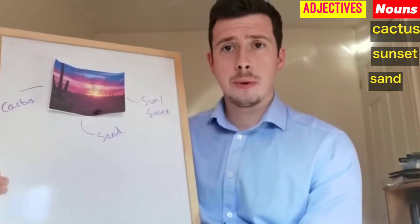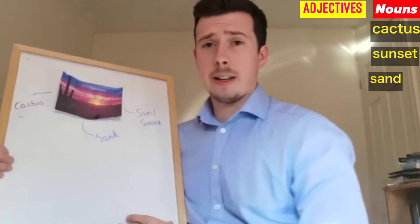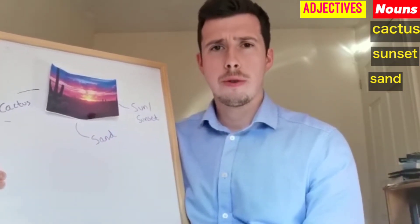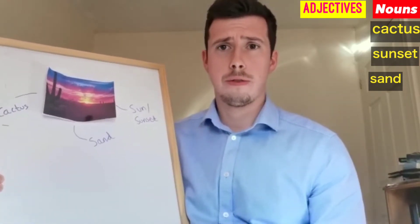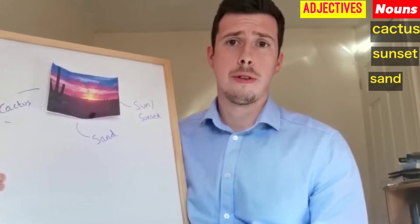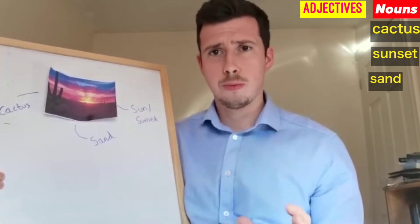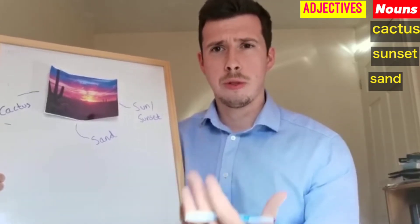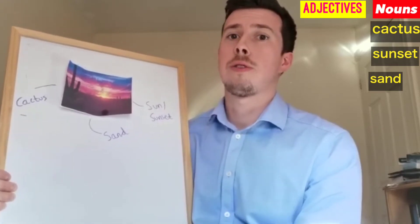Now we want to do some adjectives to describe those nouns. Ask your child: what words can you think of to describe a cactus? If they're in year four, five, or six, encourage really ambitious vocabulary. If they're in year one or two, simpler words are fine. But really try to push their vocabulary — if you think they can do better, encourage them to use the best words they can.